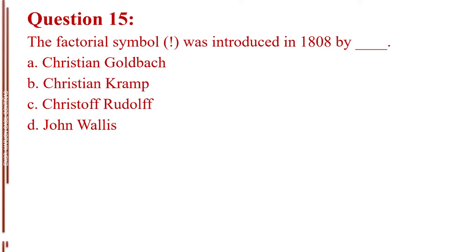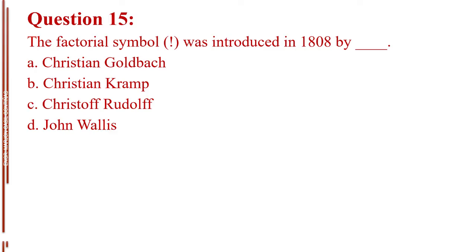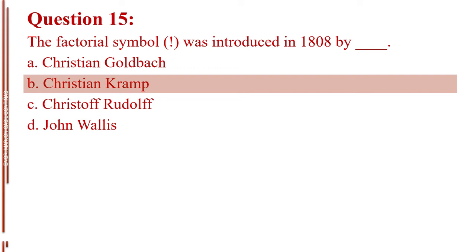Question number fifteen. The factorial symbol was introduced in 1808 by blank. Letter A, Christian Goldbach. Letter B, Christian Kramp. Letter C, Christoph Rudolph. Letter D, John Wallace. The answer is Letter B, Christian Kramp.